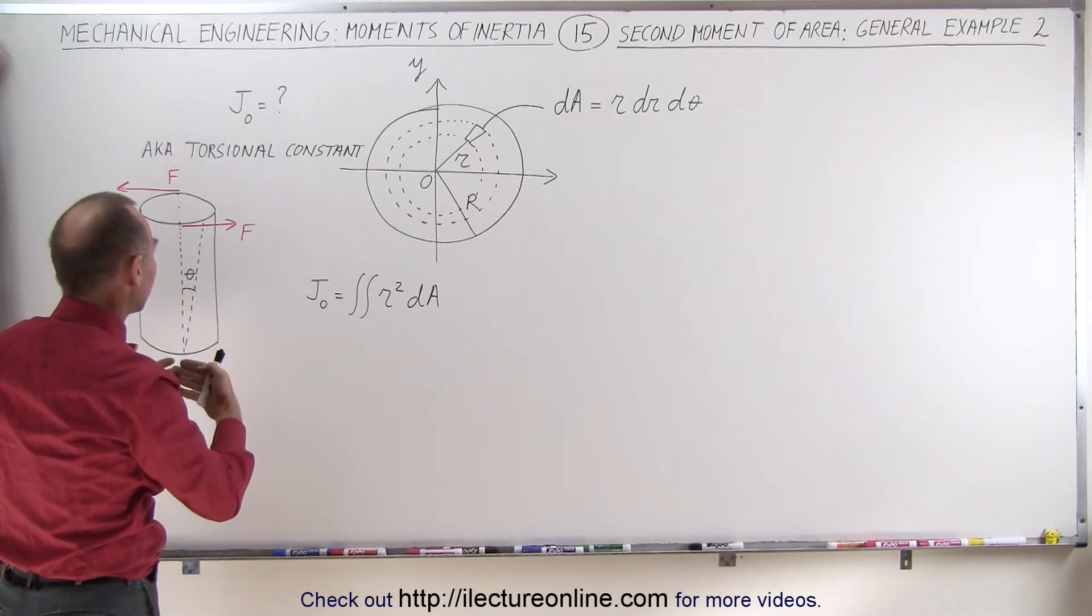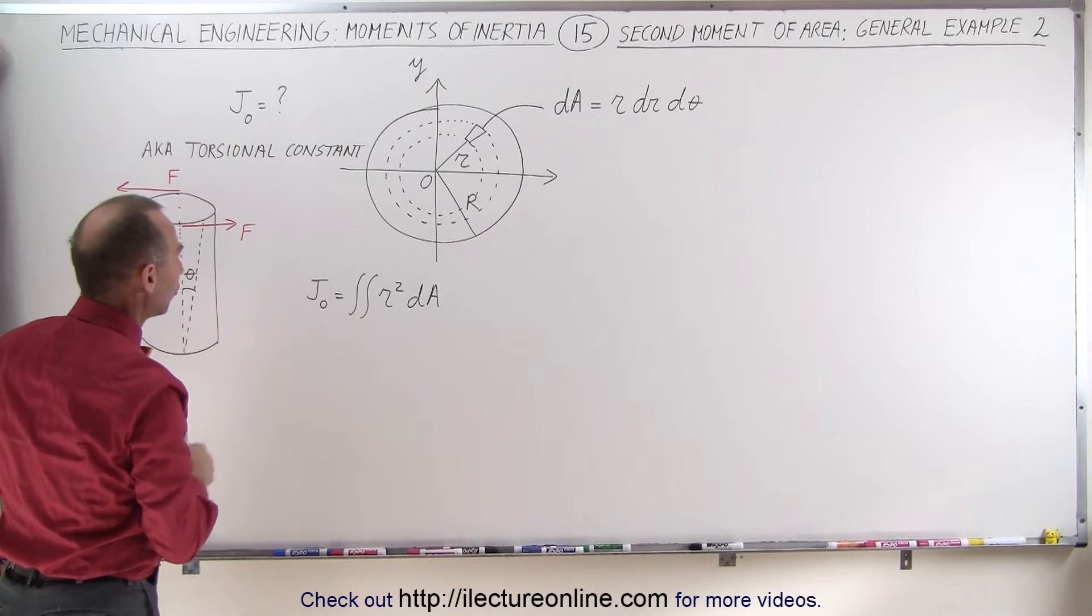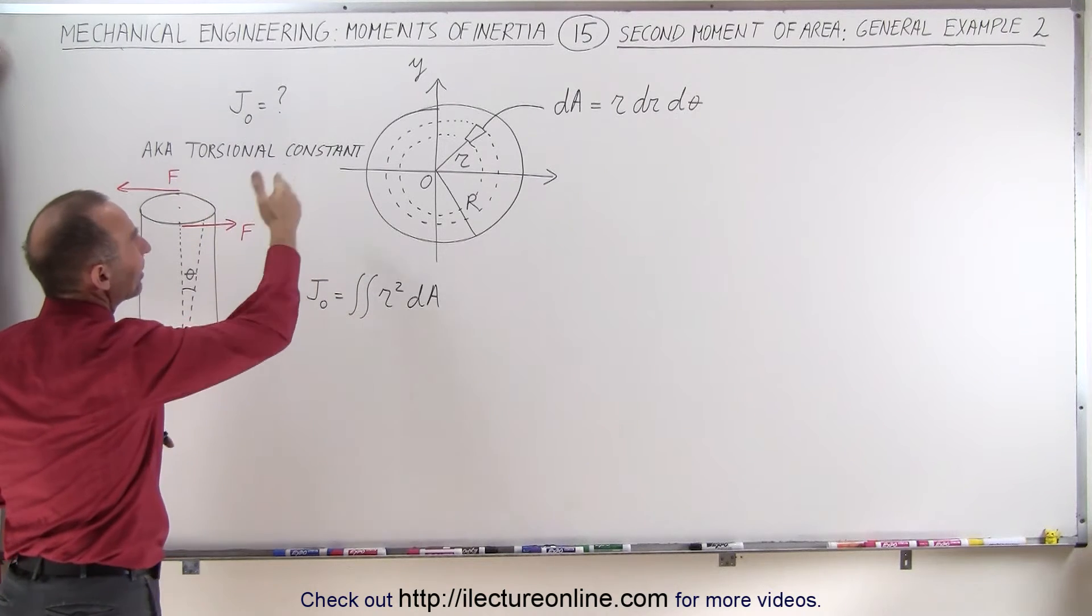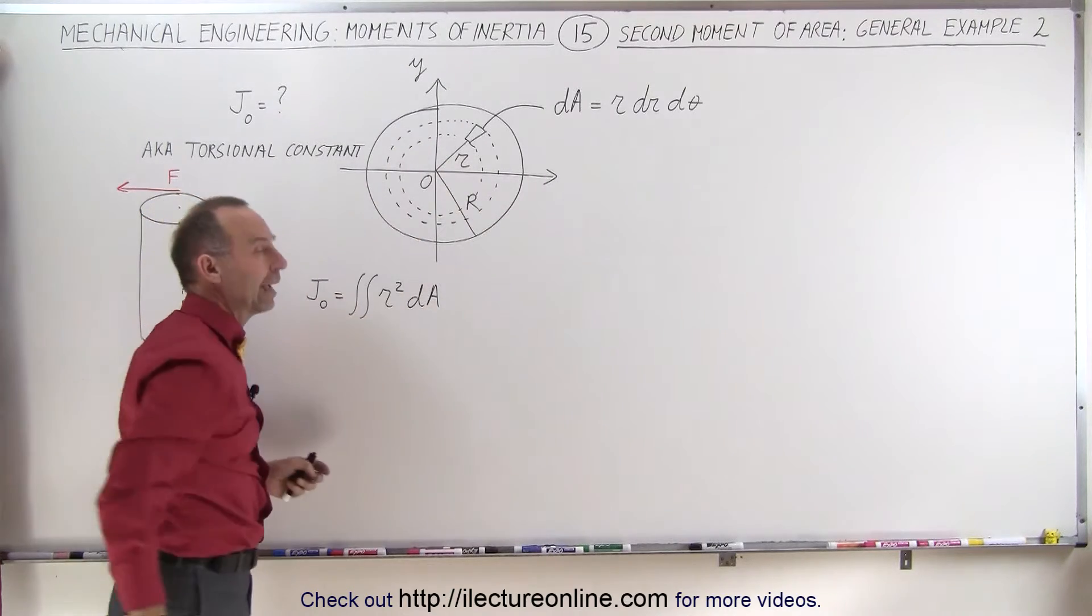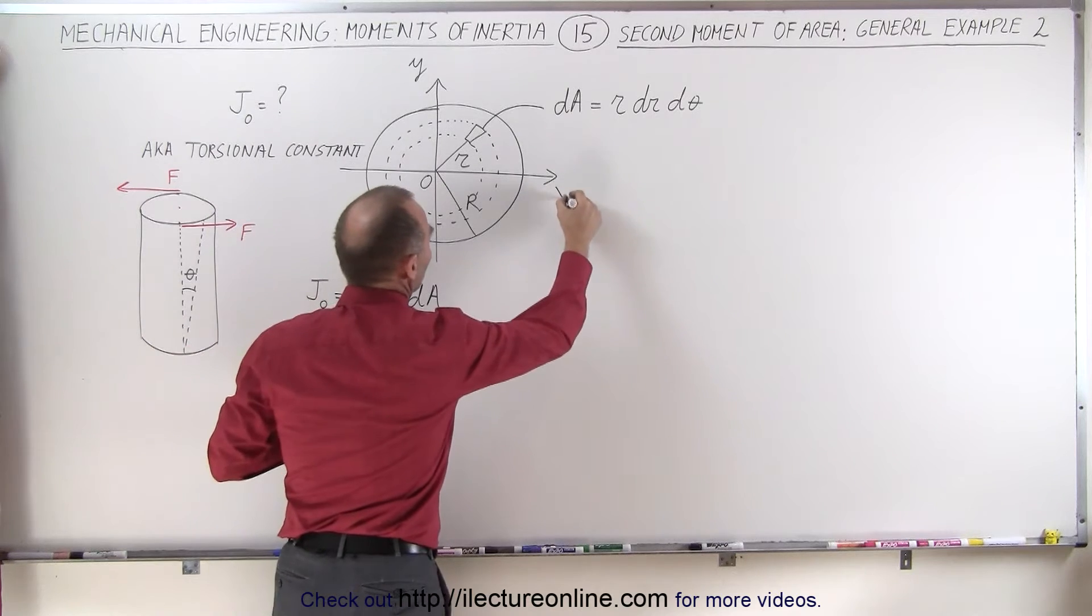And the weaker the material is, the greater the torsion on that pillar. So we can determine the torsional constant, which is the same as finding the second moment of area, by placing the cross-section of that pillar right there at the center of the xy axis, at the origin.